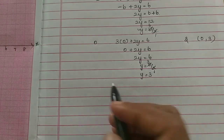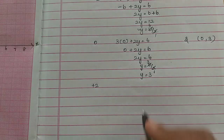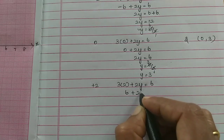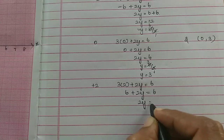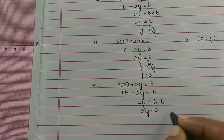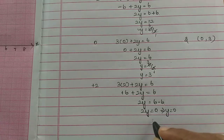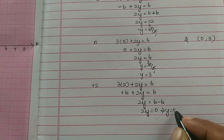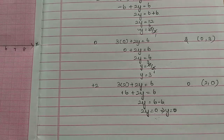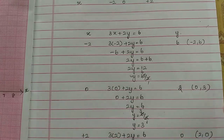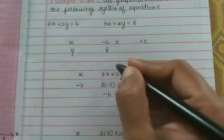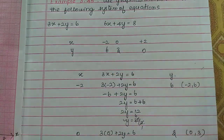Now we fix x equal to 2. So 3 times 2 plus 2y is equal to 6. 6 plus 2y equals 6. The 6 on the right side becomes minus 6 on the left. So 2y is equal to 0, which implies y is equal to 0. So x value is 2 and y value is 0, giving point 2, 0.